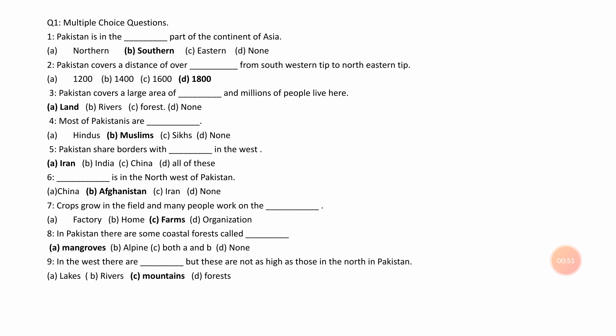Number 5. Pakistan shares borders with ___ in the west. A. Iran, B. India, C. China, D. All of these. Answer is A. Iran.